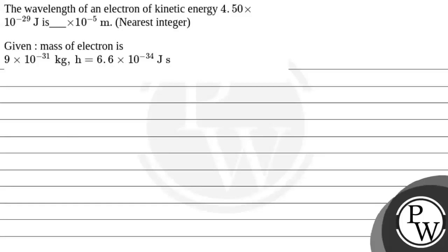Let's read this question: the wavelength of an electron of kinetic energy 4.50 × 10⁻²⁹ joule is dash × 10⁻⁵ meter — find the nearest integer value. The mass of the electron and Planck's constant values are given to us.